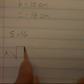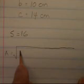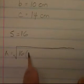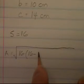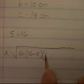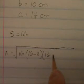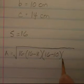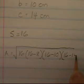And let's plug this into our formula. Area is going to be equal to the square root of 16 times 16 minus 8 times 16 minus 10 times 16 minus 14.